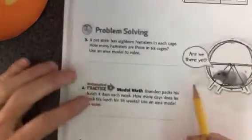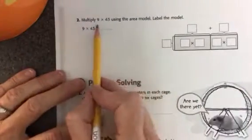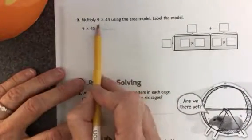All right, let's look at the next page. These are all very similar. Here you're going to multiply 9 times 43.